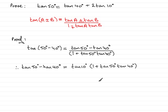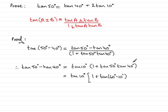Now I'm going to work on the right-hand side. I'll keep tan(10°) at the front in a square bracket, and expand tan(50°) as tan(60° - 10°) and tan(40°) as tan(30° + 10°). The trick here is to use key angles — 60° and 30° — because we know the results for tan(60°) and tan(30°), and it also involves the angle 10°.